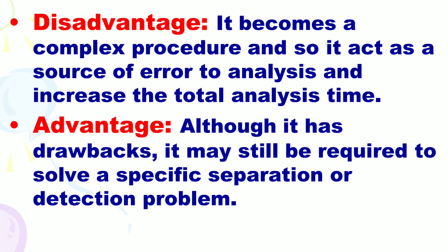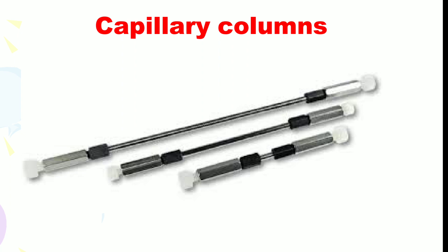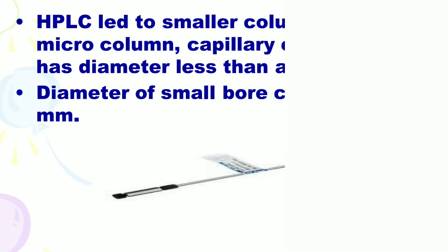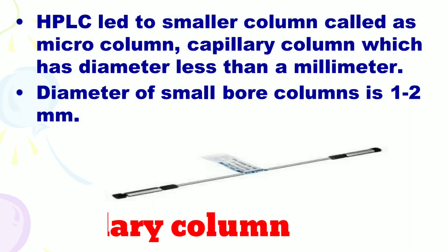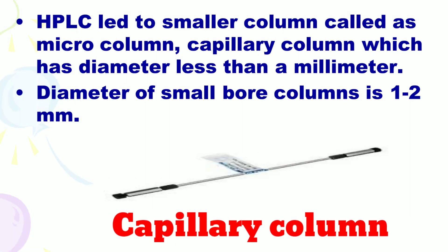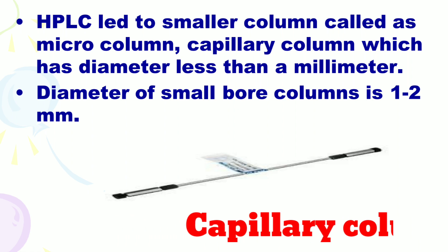The advantage is that although it has drawbacks, it may still be required to solve a specific separation or detection problem. Next is capillary columns. HPLC leads to smaller columns called micro columns. The capillary column has a diameter less than a millimeter. The diameter of small bore columns is 1 to 2 mm.